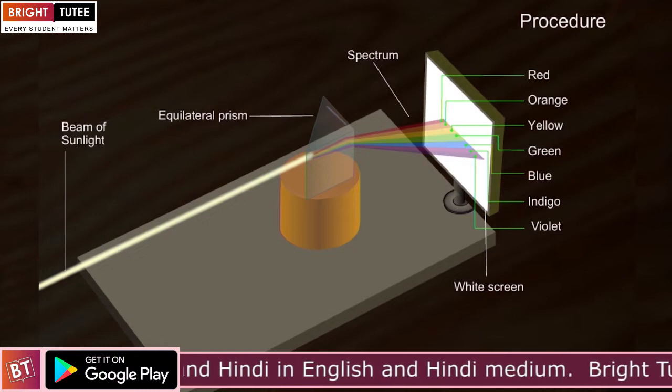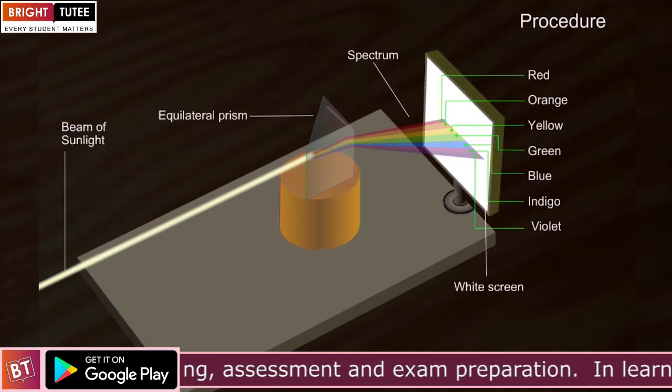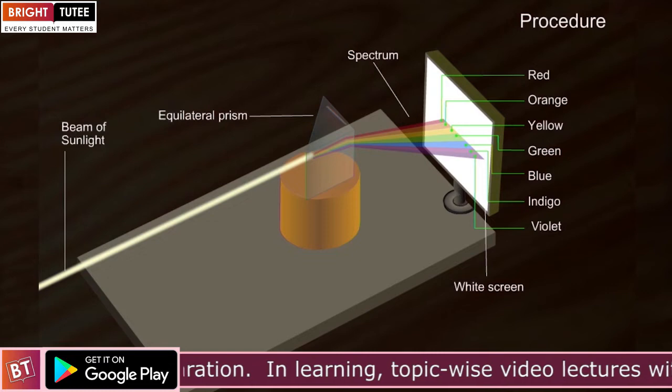This order of colors can easily be remembered by remembering the acronym, the first alphabet of all the colors VIBGYOR. This is the spectrum which was formed when a beam of light was allowed to pass through a glass prism.